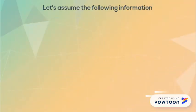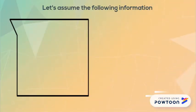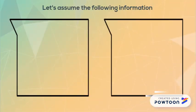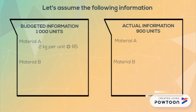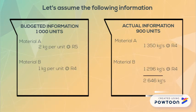For this example we are going to use budgeted production of 1000 units and actual production of 900 units. We will be using materials A and B. In the budget, 2kg and 1kg of each are used, and for the actual information we will assume 1300 and 1200 for each.